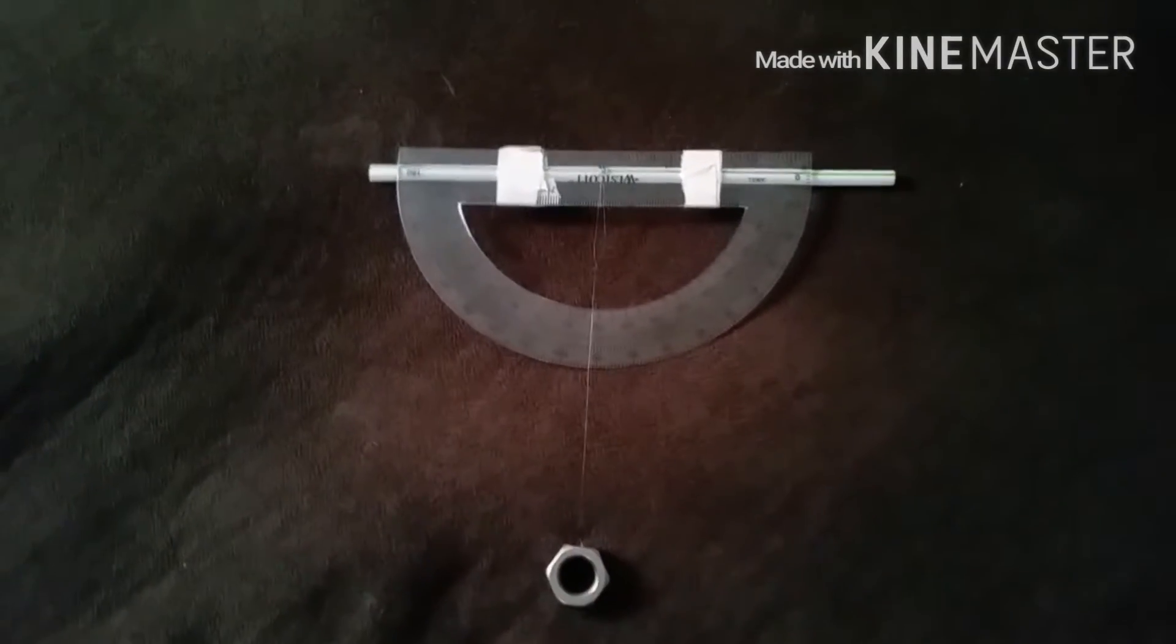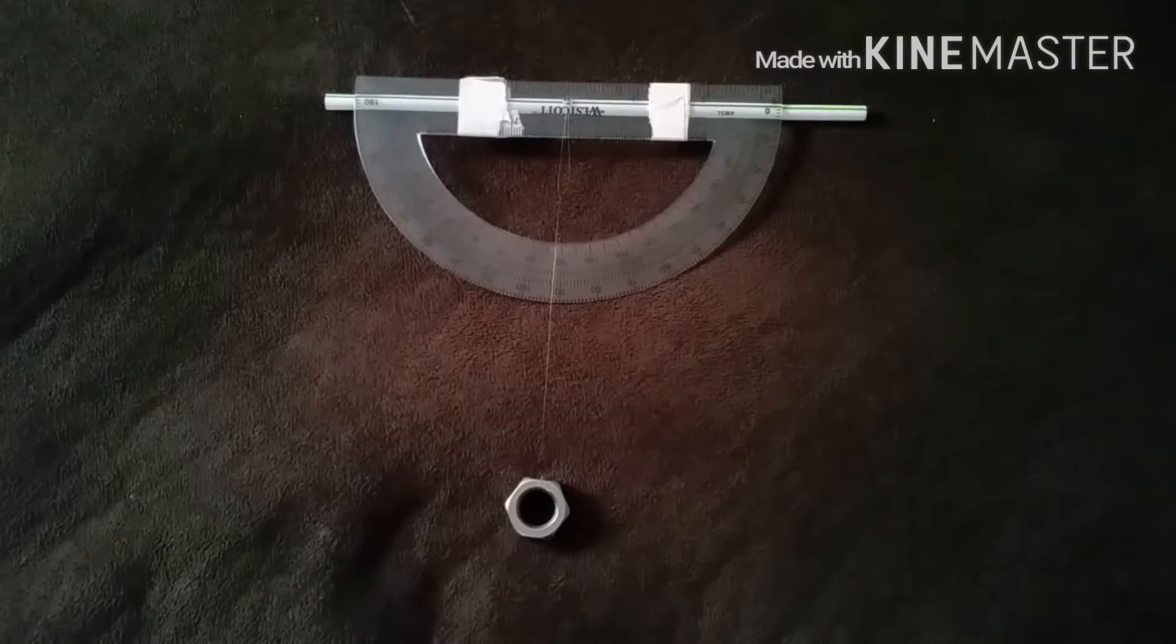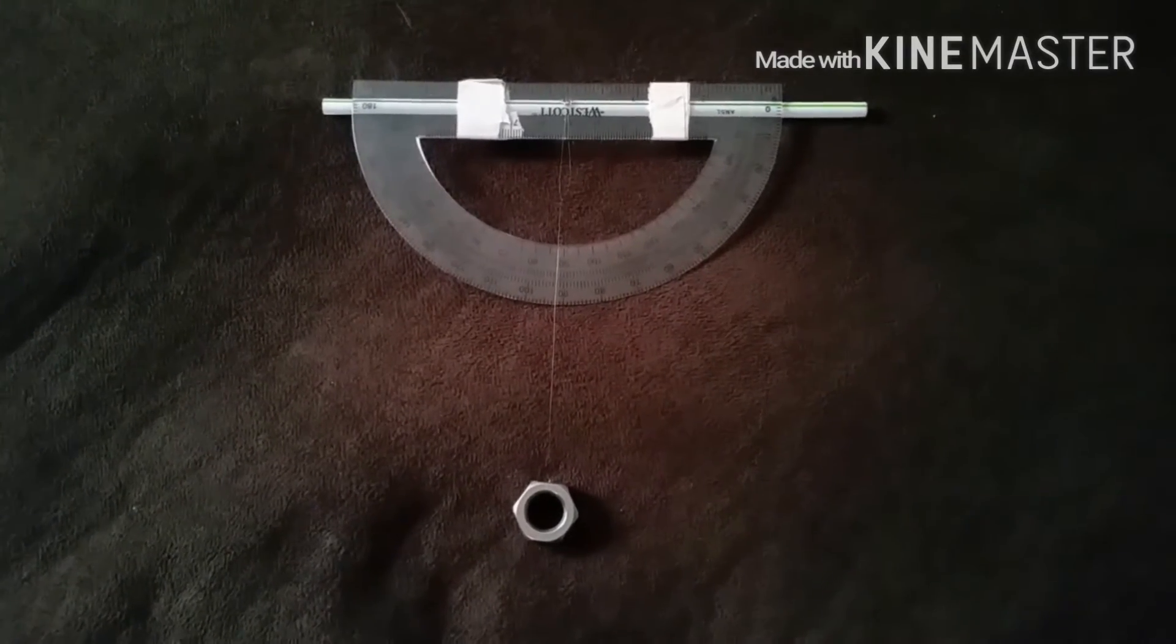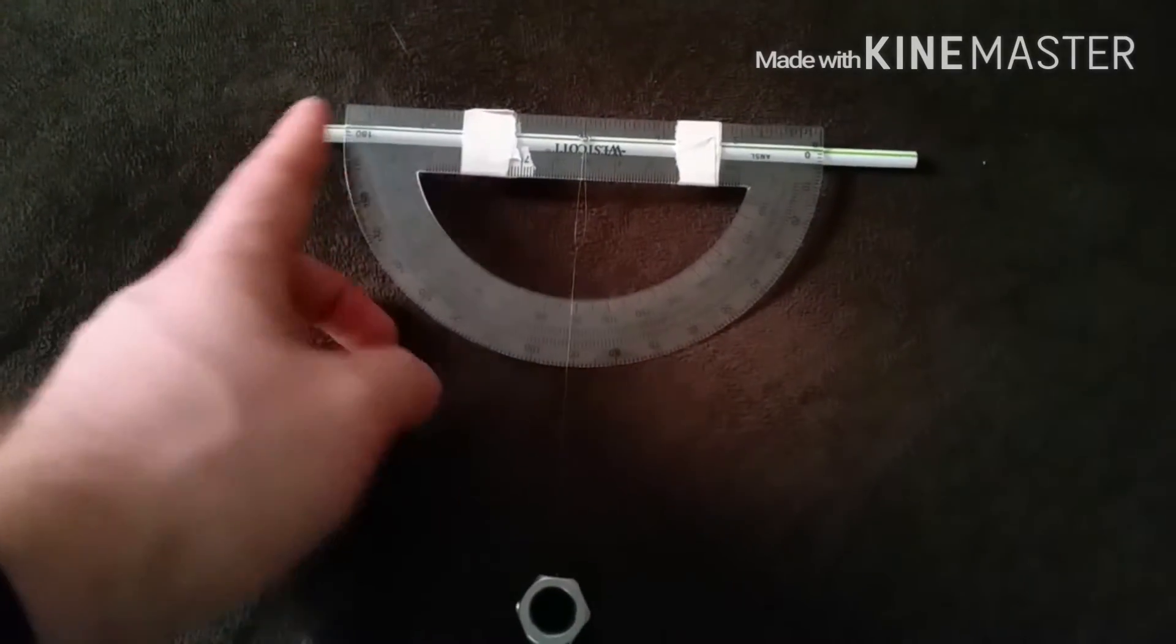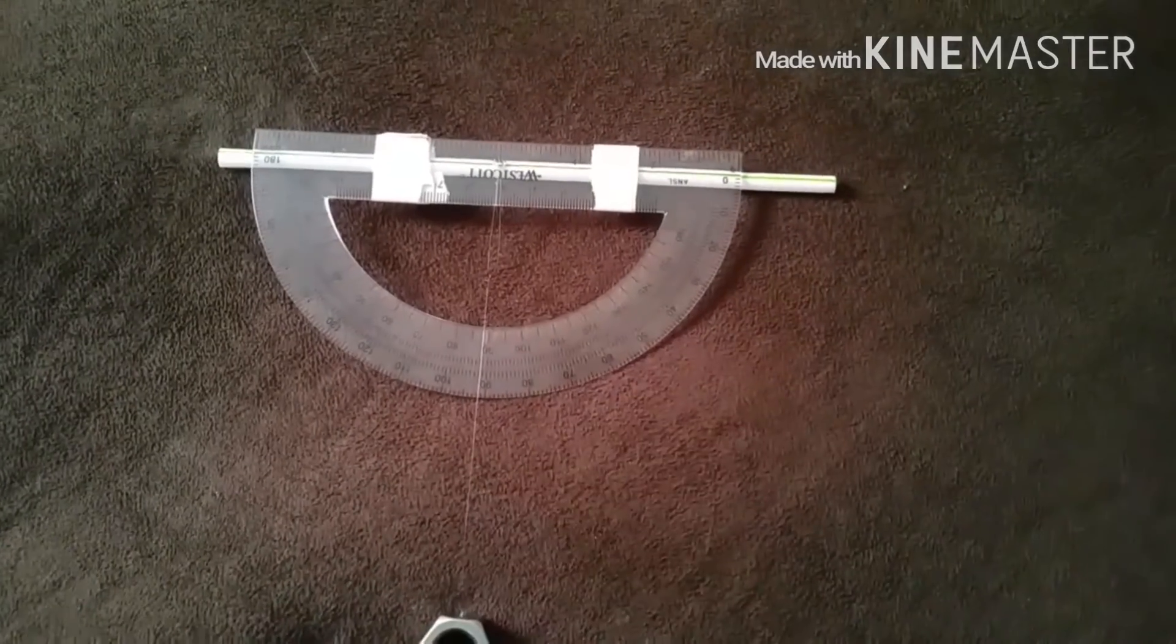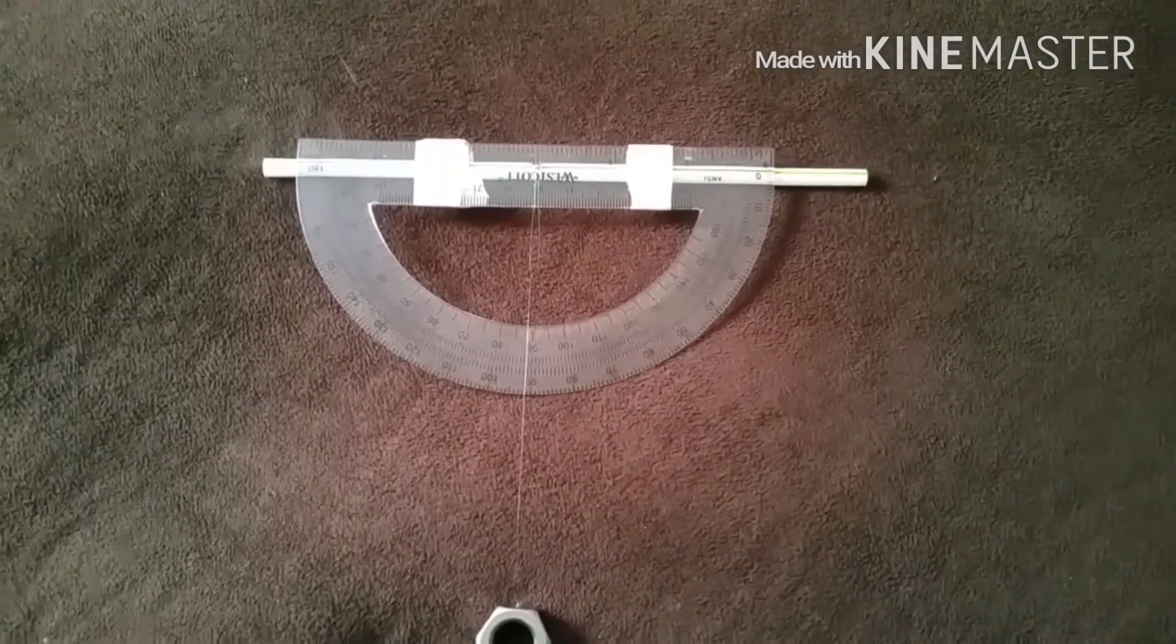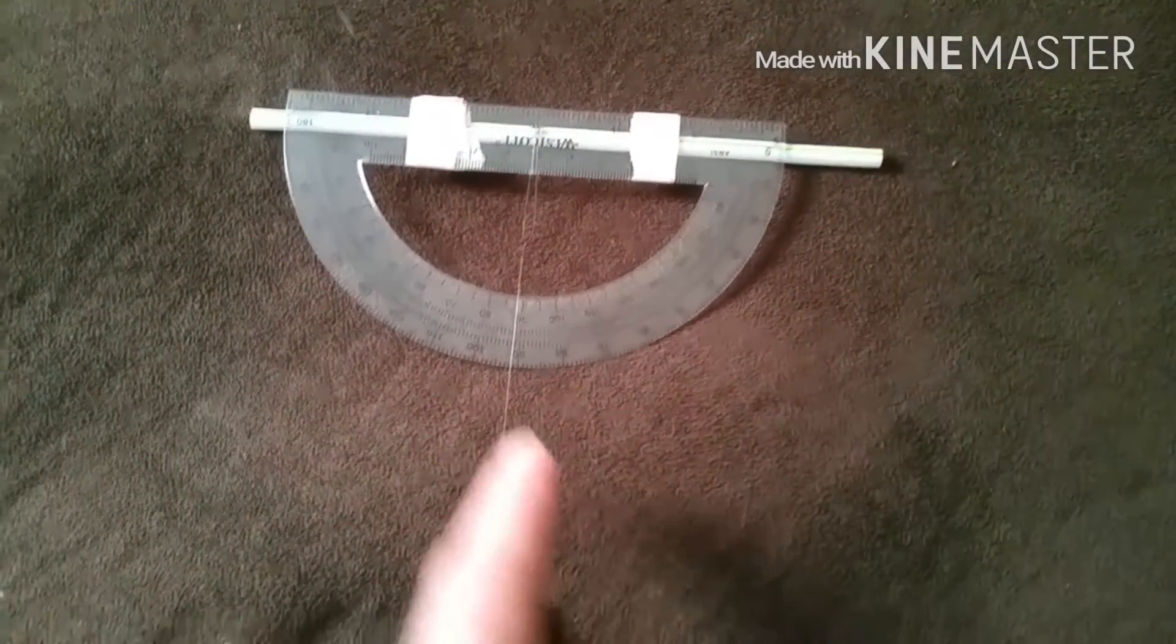Alright, so what I've done here is I've basically made a clinometer out of my protractor. I have a straw attached on the origin line and that is what I'm going to use to look through.